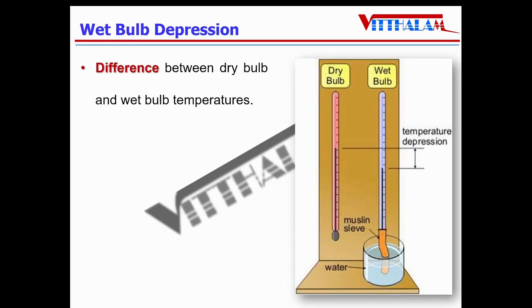Next is the wet bulb depression. Basically, it is the difference between the dry bulb temperature and the wet bulb temperature. It depends upon the humidity of air. So let's understand humidity.